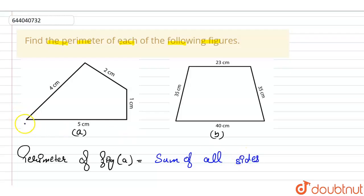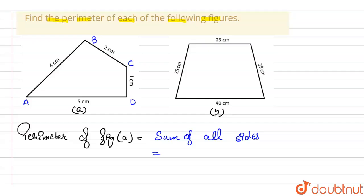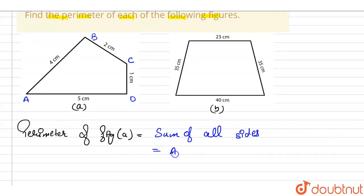Let us suppose this is point A, this is B, this is C, and this is D. So sum of all sides will be equal to, in the figure A, the sum of all sides will be AB plus BC plus CD plus DA.